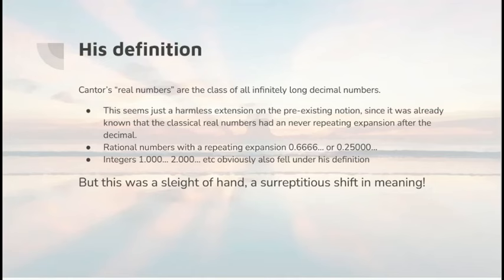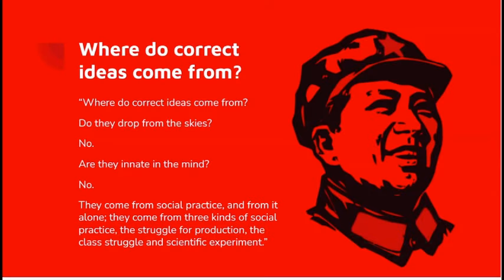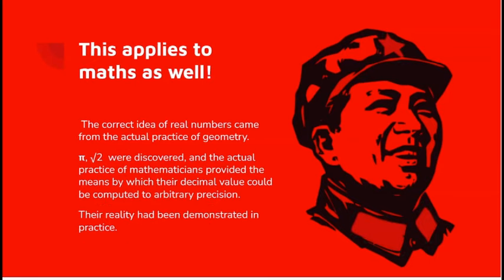So is this valid? No, it's not. It's a sleight of hand. There's a surreptitious shift of meaning. I'm now going to come all hard line. Where do correct ideas come from? Do they drop from the sky? No, they don't. Are they innate in the mind? No, they're not. They come from social practice, and from it alone. And they come from the practice of struggle for production, class struggle, and the scientific experiment. And this applies to maths as well.